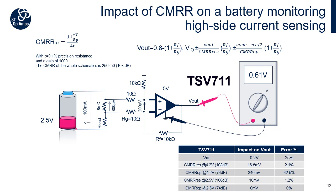This table summarizes the impact of the CMRR at different battery voltages when using the TSV711. We can see that when the battery is fully charged, the op-amp's CMRR is the main contributor to the accuracy of the current measurement. The precision of measurements will change depending on the voltage level of the battery due to the CMRR of the TSV711 amplifier.